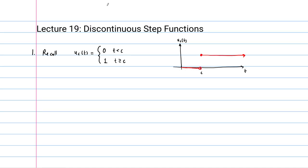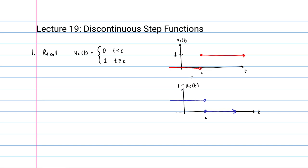We are frequently going to want to switch the roles of the one and the zero, and that can be done by considering the function one minus u sub c. Because if u sub c is at a height of one, then one minus u sub c will be one on the first portion and zero on the rest. So this function is one until it reaches c, and then it steps down to zero from there on.